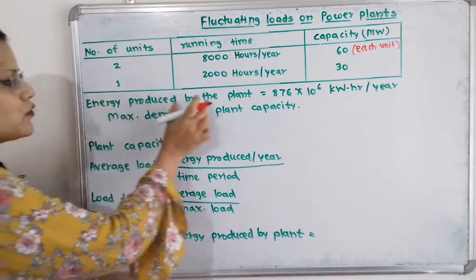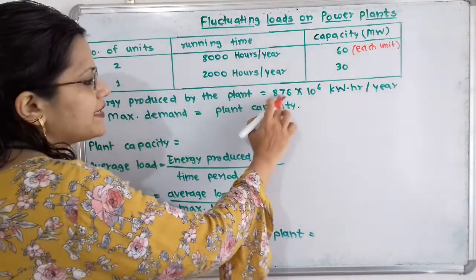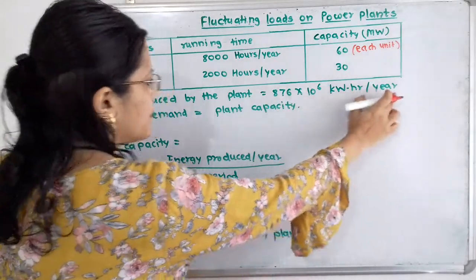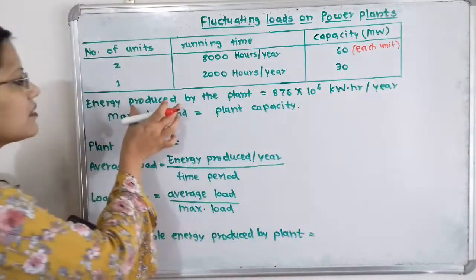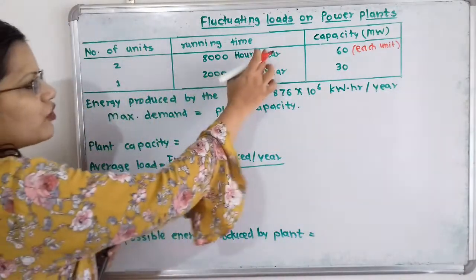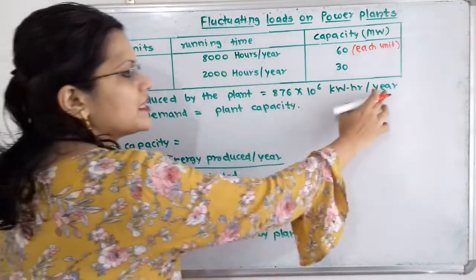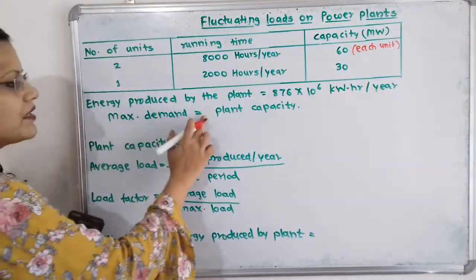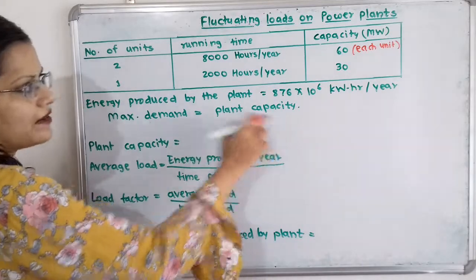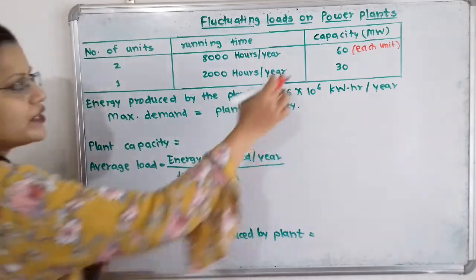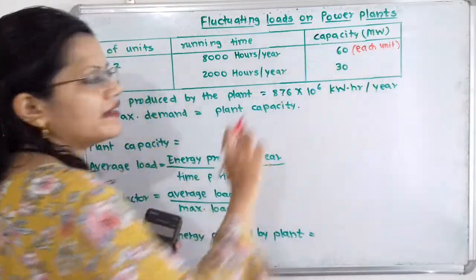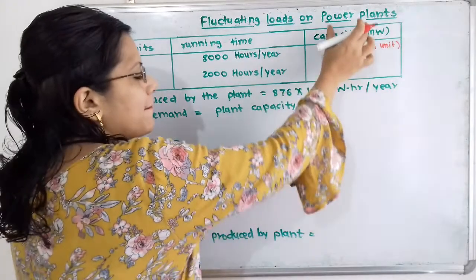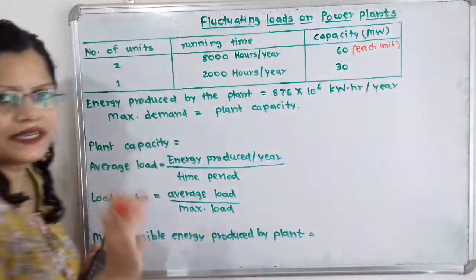Energy produced by the plant is given as 876 × 10^6 kWh per year. Here, if we observe, the time period is given in years. Then, maximum demand is equal to plant capacity. So, this capacity in MW is given, and we will consider this as the maximum demand.